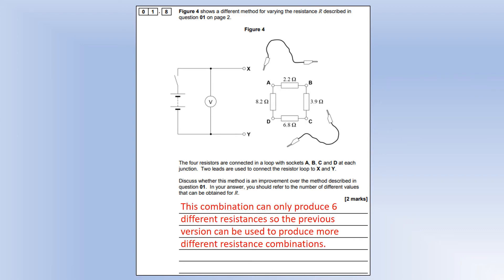Previously, there were 12. So you can see this one would not be as good as the first setup because it can only produce half as many resistor positions.